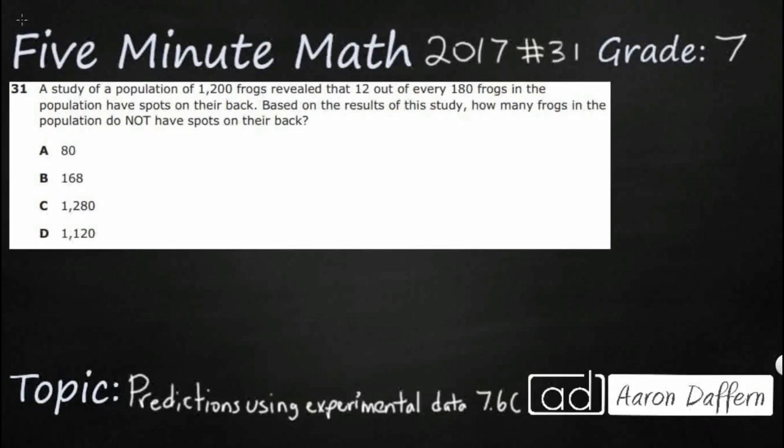Hello and welcome to 5-Minute Math. Today we are looking at the 7th grade concept of predictions using experimental data. This is standard 7.6c in the great state of Texas and we are using item number 31 off the 2017 released STAR test.